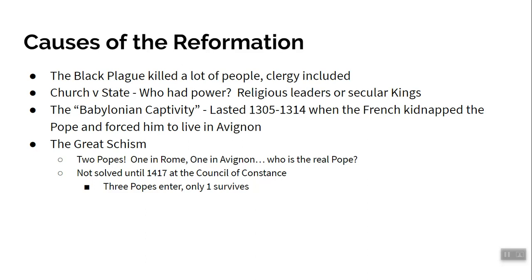Then there's an event called the Babylonian Captivity. From 1305 to 1314, the French kidnapped the Pope and forced him to live in the city of Avignon instead of in Rome. Once the Babylonian Captivity ended, some popes following that Pope chose to live in Avignon, raising the question of whether a Pope not in Rome is really the Pope. Eventually, the Catholic Church appointed a Roman Pope even though there was already a Pope in Avignon, giving us two Popes — one more than you're supposed to have.